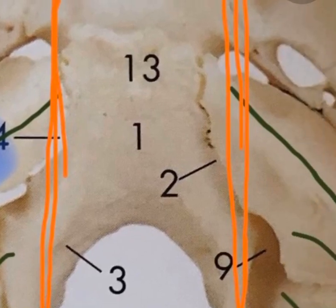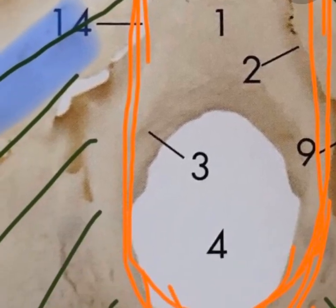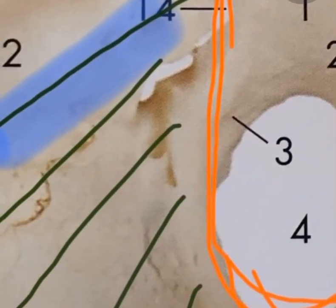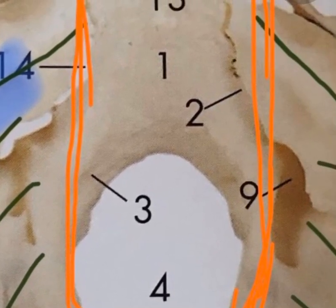The free margin is marked in orange. The free margin is not attached to any bony landmark along its course — it just goes straight and is attached to the anterior clinoid process. So the attached margin forms nice lines, and the free margin encircles the tentorial notch and then gets its attachment at the anterior clinoid process. Between the free margins you can see a nice oval-shaped foramen, which is called the tentorial notch.